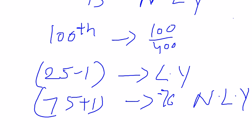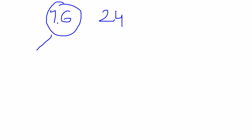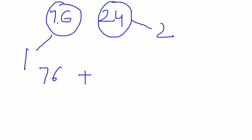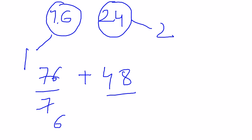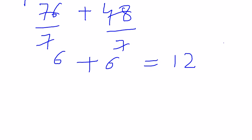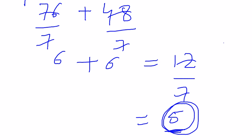Now we find the total odd days: non-leap years contribute 1 odd day each, and leap years contribute 2 odd days each. So 76 non-leap years give 76 odd days, and 24 leap years give 24 × 2 = 48 odd days. The total is 76 + 48 = 124 odd days. Dividing 124 by 7 gives a remainder of 5 — so there are 5 odd days in 100 years.